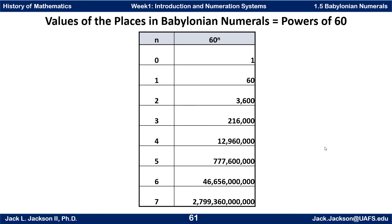It might be useful to think about what each place value means in Hindu-Arabic form. The first place value is 60 to the 0th power, or just 1. The second place value from the right is 60 to the first power, or 60. The third place value is 60 squared, or 3,600. The fourth place value is 60 to the third, then 60 to the fourth, fifth, sixth, and seventh.